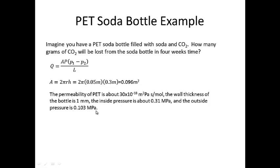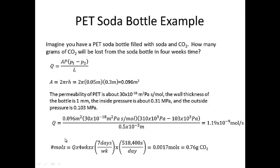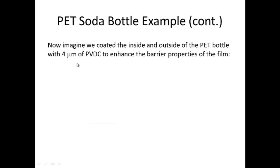The wall thickness of the bottle is approximately one millimeter. The inside pressure is about 0.31 megapascals, with an outside pressure of 0.103 megapascals. Plugging these numbers in for the mass flow rate, we arrive at a mass flow rate of 1.19 times 10 to the minus 9th moles per second. If I convert this into number of moles by multiplying the mass flow rate by four weeks, we arrive at 0.0017 moles, and using the molecular mass of CO2, we arrive at 0.76 grams of CO2. Now that may not seem like very much, but keep in mind that CO2 is a very lightweight molecule, so this is a significant amount of CO2 being lost from the soda bottle.